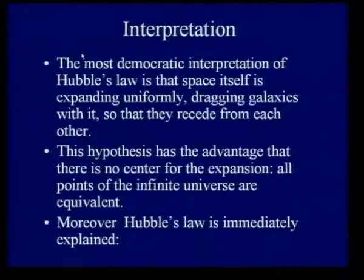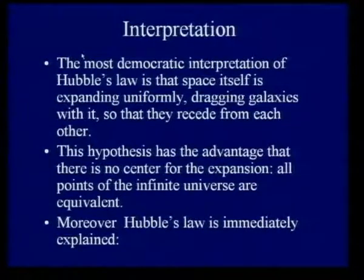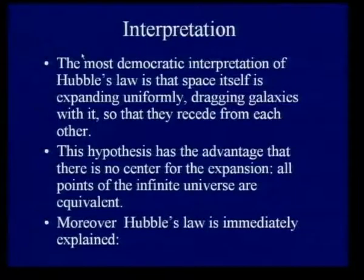The most democratic interpretation is that space itself is expanding uniformly, dragging galaxies with it so that they recede from each other. The advantage of this hypothesis is that there is no center for the expansion, and all points of this infinite universe are equivalent. Moreover, this hypothesis immediately explains the Hubble law.